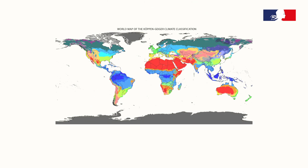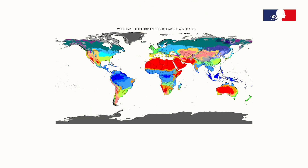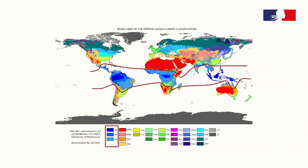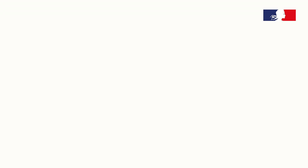The Köppen classification is one of the most widely used climate classification systems. It is based on the concept that native vegetation is the best expression of climate. Thus, climate zone boundaries have been selected with vegetation distribution in mind. It combines average annual and monthly temperatures, precipitation, and also the seasonality of precipitation.